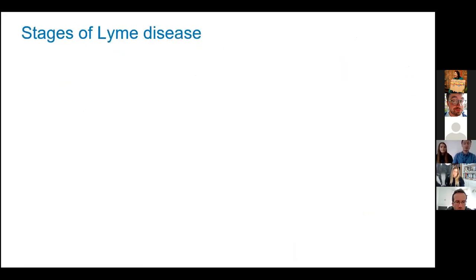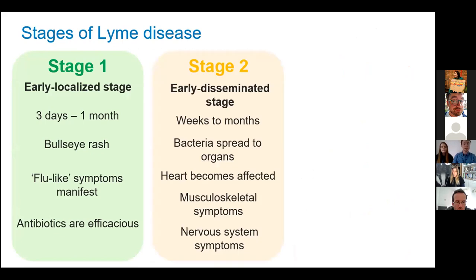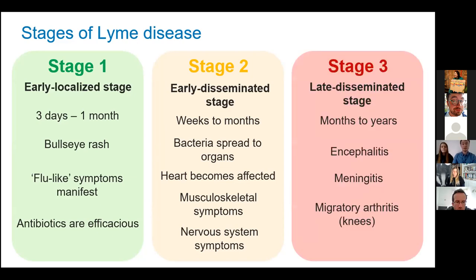It is important to see your GP after you get bitten by a tick, even if you don't have a rash. If left untreated, or if other factors are involved such as the person being immunocompromised, Lyme disease can develop in severity. After the initial infection, which can last up to a month, stage two involves the bacterium spreading out from the initial infection site to other organs, which increases the likelihood of it infecting the heart, the musculoskeletal system, and the nervous system. If the infection continues, it can lead to encephalitis and meningitis, which both lead to neurological complications and arthritis.